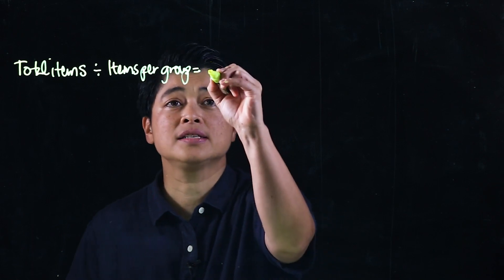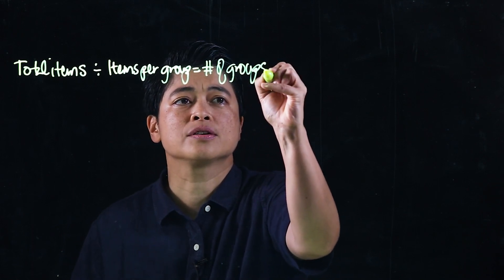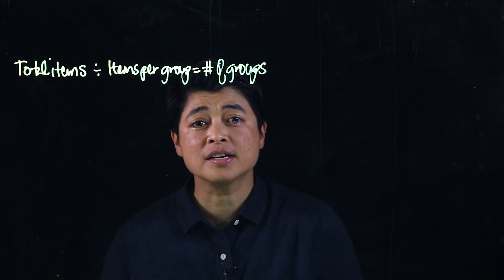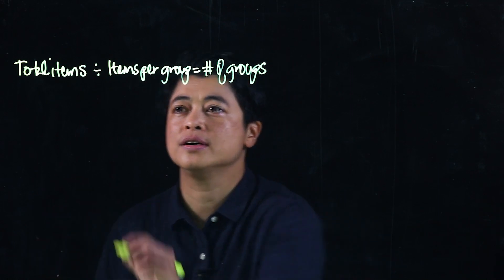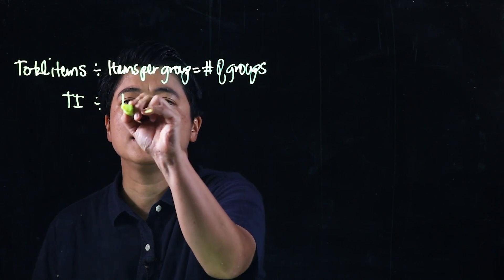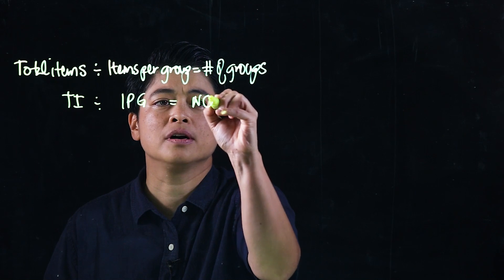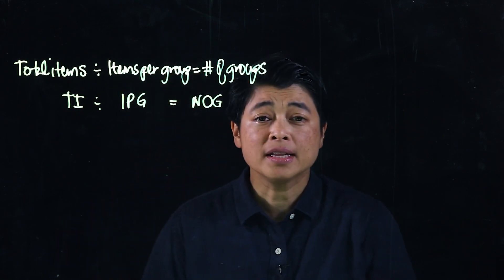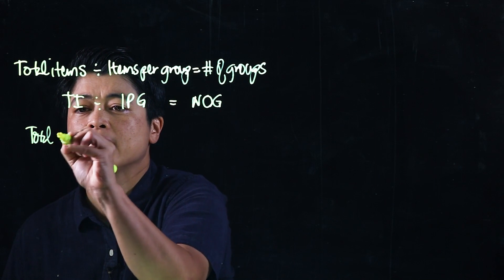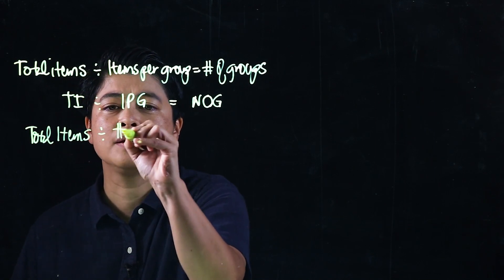Which gives us number of groups. This is just the reverse of multiplication. So total items divided by items per group gives us number of groups, but we also can have total items divided by number of groups.